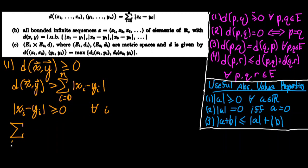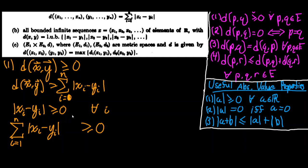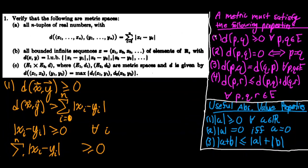The sum from i equals 1 to n of the absolute value of xi minus yi is greater than or equal to zero, because each absolute value of xi minus yi is greater than or equal to zero, and the sum of a bunch of things that are greater than or equal to zero must itself be greater than or equal to zero. So we've proven that this metric satisfies property 1.